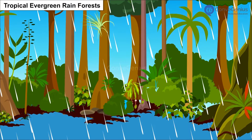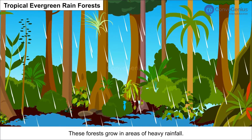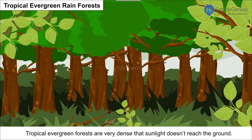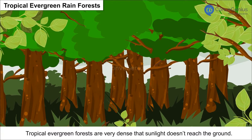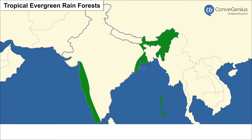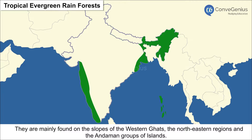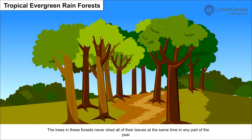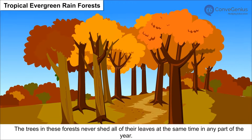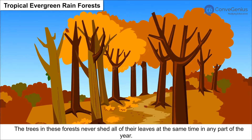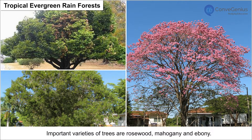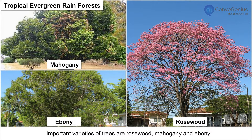Tropical Evergreen Rainforests grow in areas of heavy rainfall. These forests are very dense so that sunlight doesn't reach the ground. They are mainly found on the slopes of the Western Ghats, the northeastern regions, and the Andaman and Nicobar groups of islands. The trees never shed all of their leaves at the same time in any part of the year. Important varieties of trees are rosewood, mahogany, and ebony.